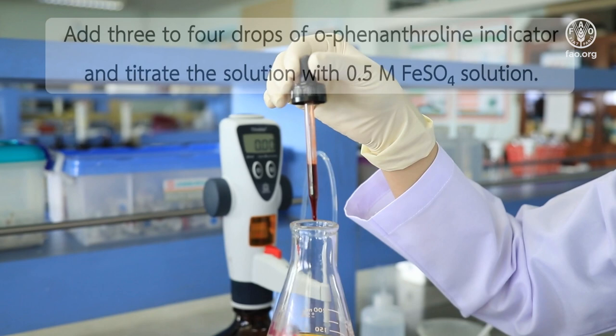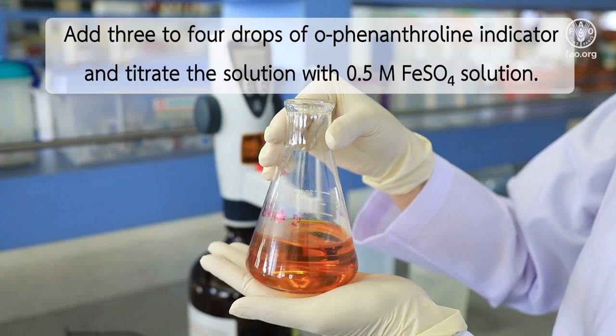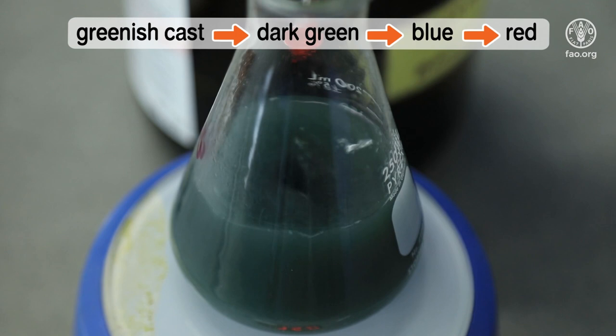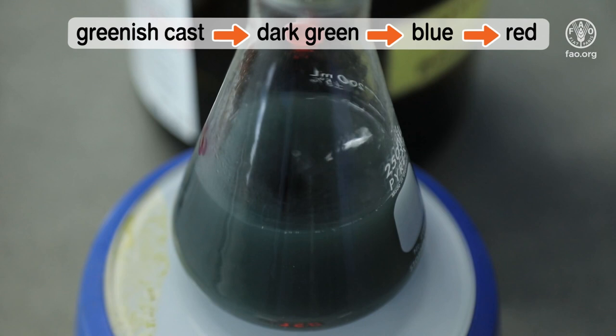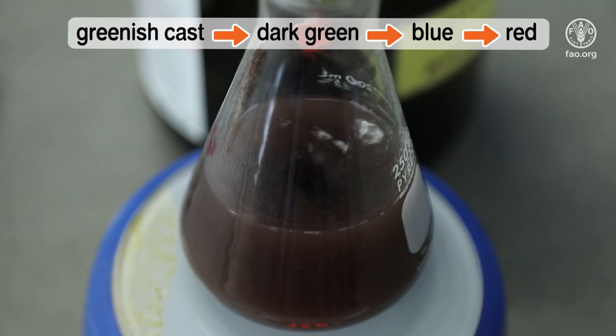Then add 100 ml of water into the flask. If you proceed with the titration by manual method, add 3 to 4 drops of phenanthroline indicator and titrate the solution with 0.5 molar ferrous sulfate solution. As the end point is approached, proceed carefully with the ferrous titration when using phenanthroline indicator. The solution takes on a greenish cast and then changes to a dark green. At this point, add the ferrous sulfate heptahydrate drop by drop until the color changes sharply from blue to red maroon color in reflected light against a white background.